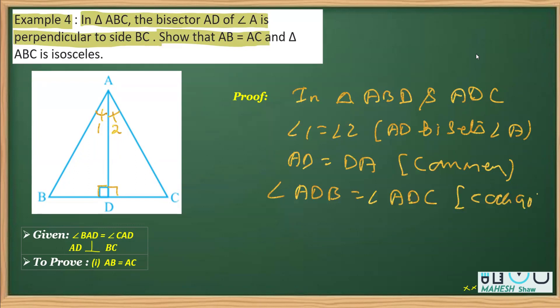So therefore I can say triangle ABD is congruent to triangle ADC, and these two triangles are congruent clearly by angle side angle, that is ASA congruent condition.